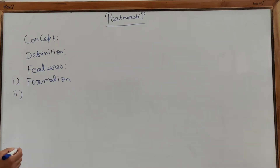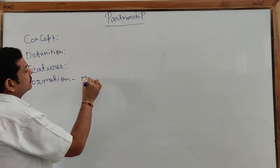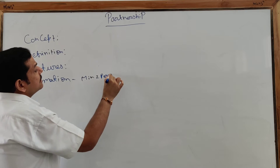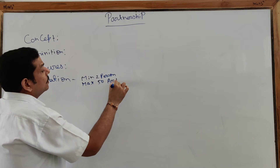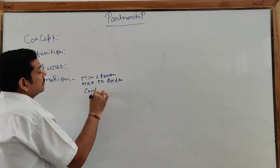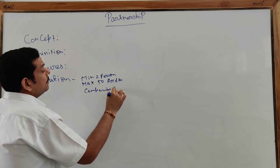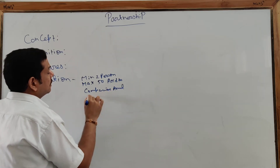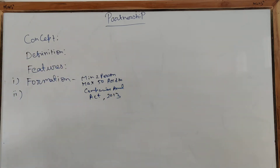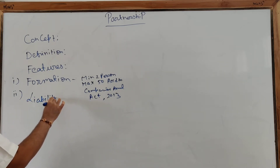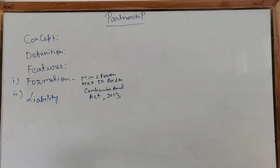The minimum number of persons required is two, and the maximum is 50 according to the Companies Amendment Act. Regarding liability, the liability of the partners is unlimited, which means in case of payment of debt or any liability, their personal assets will also be held responsible.